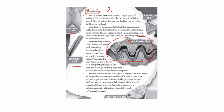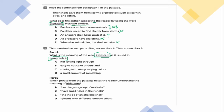Let's look at the questions. Number one says: read the sentence from paragraph one — The shells save them from predators such as starfish, birds, and otters. The question is: what does the author suggest by using the word predator? We need to pick two answer choices. A: Predators can harm some animals — maybe. B: Predators can find shelter from storms — that's not what the sentence said. C: An animal shell helps protect it — maybe.